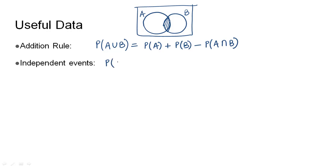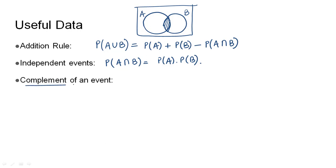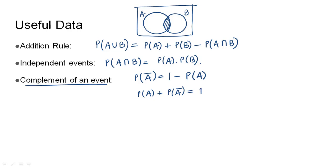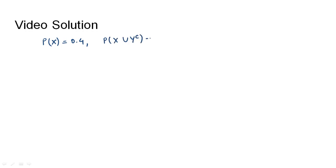Secondly, for independent events A and B, the probability of A intersection B is the product of the two individual probabilities. The third rule is the complement of an event: P(A complement) = 1 - P(A). This indicates that the probability of an event and the probability of its complement sum to one.